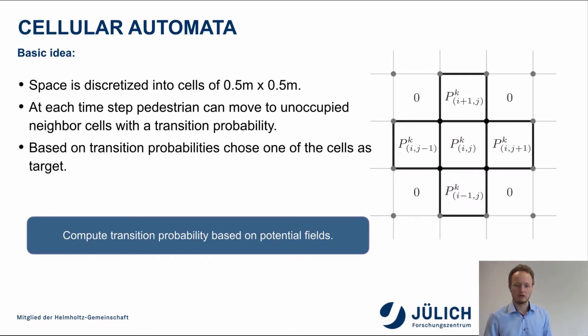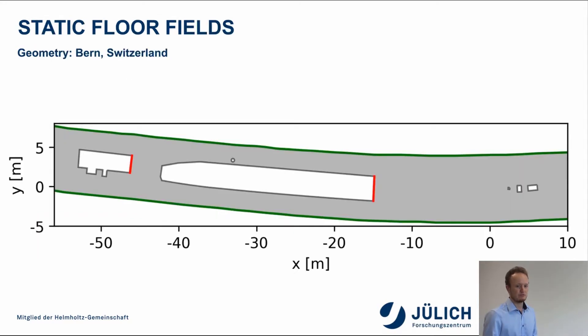It's based on the idea of cellular automata, where the space is discretized into cells of 0.5 times 0.5 meters. And at each time step, the pedestrian can move towards one of his unoccupied neighboring cells with a given transition probability. In our model, this transition probability is computed by the combination of multiple underlying potential fields. One of these potential fields will not change during the course of the simulation. It only depends on the structure properties of the used geometry. In our case, we will take a more detailed look at this geometry from the train station in Bern-Westerland.